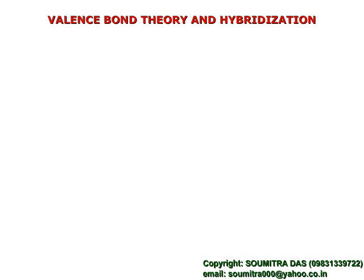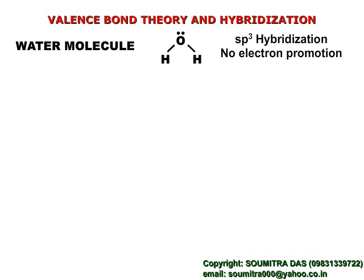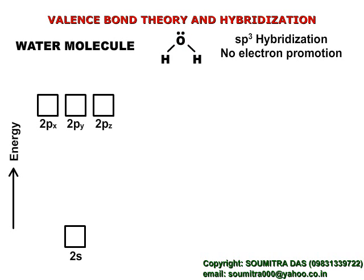Now let's see the hybridization scheme in water molecule. The central atom is oxygen. The ground state configuration of the valence shell is like this.